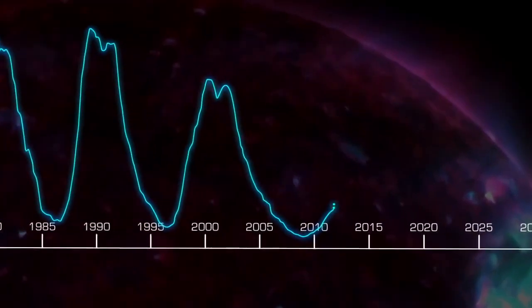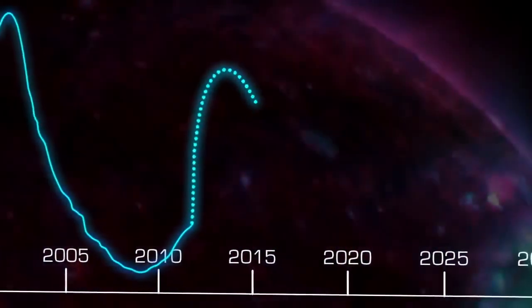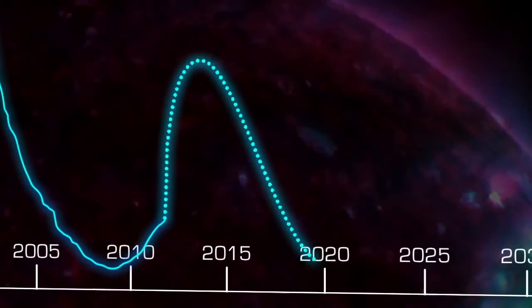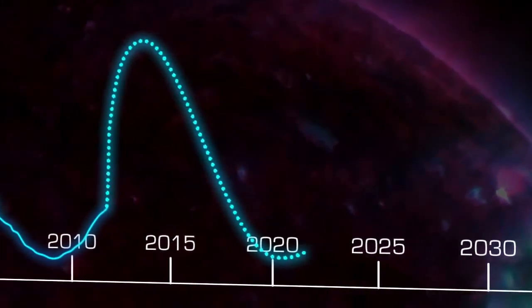Right now, the Sun is approaching solar maximum, so flares and CMEs are more common than they were a few years ago. This cycle may peak in 2013 or early 2014 and should reach its minimum around 2020, although predictions about the Sun are still uncertain.